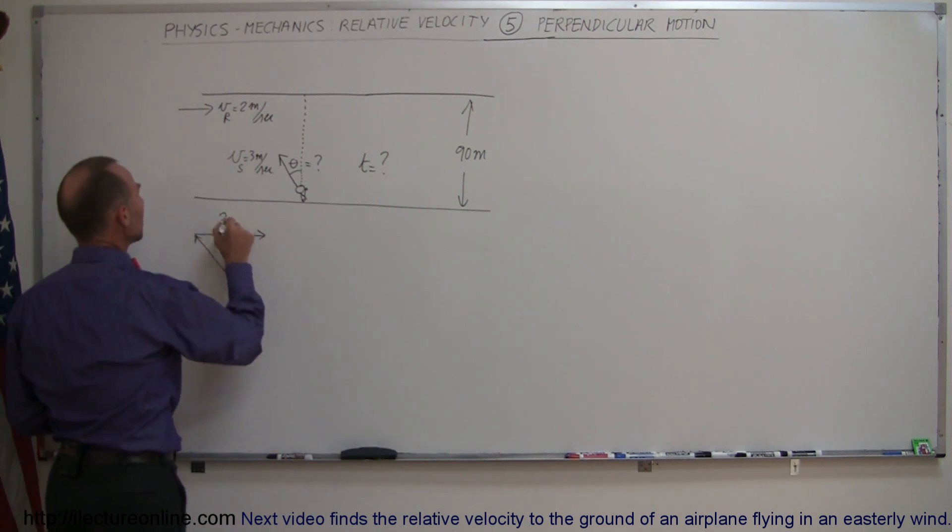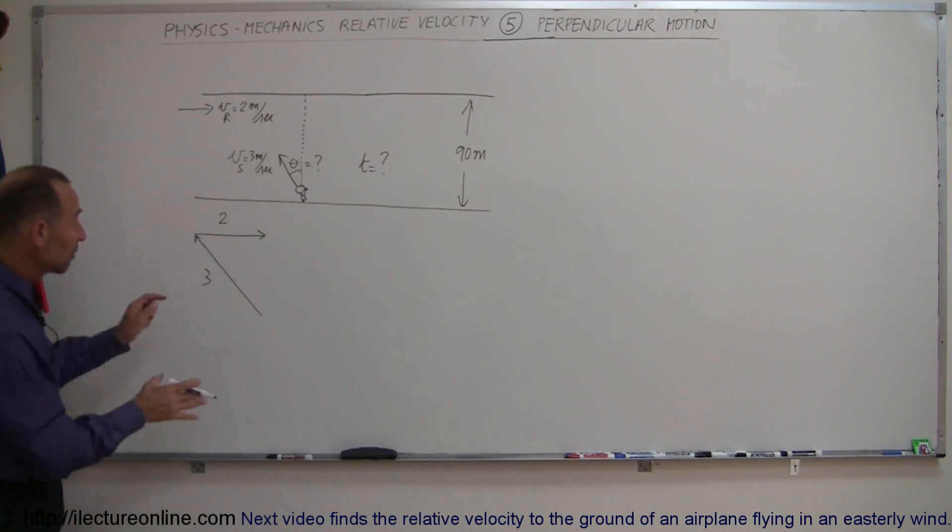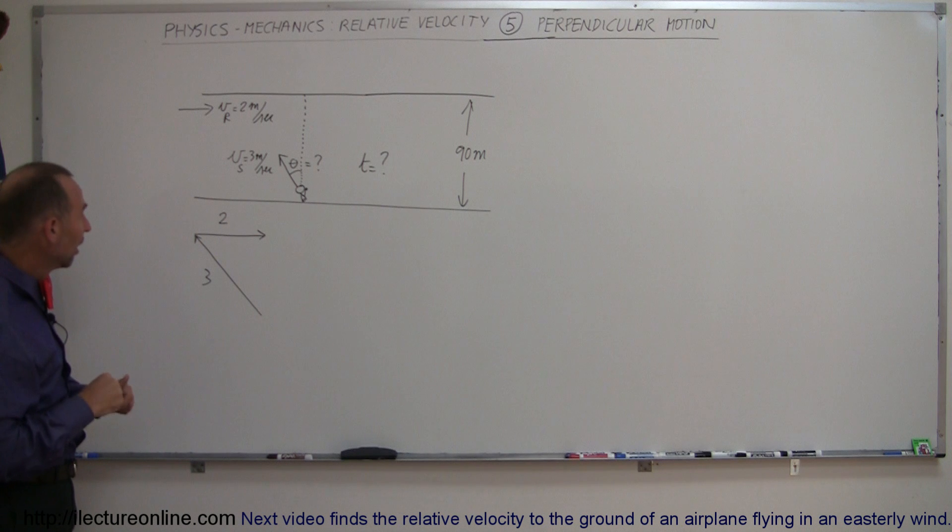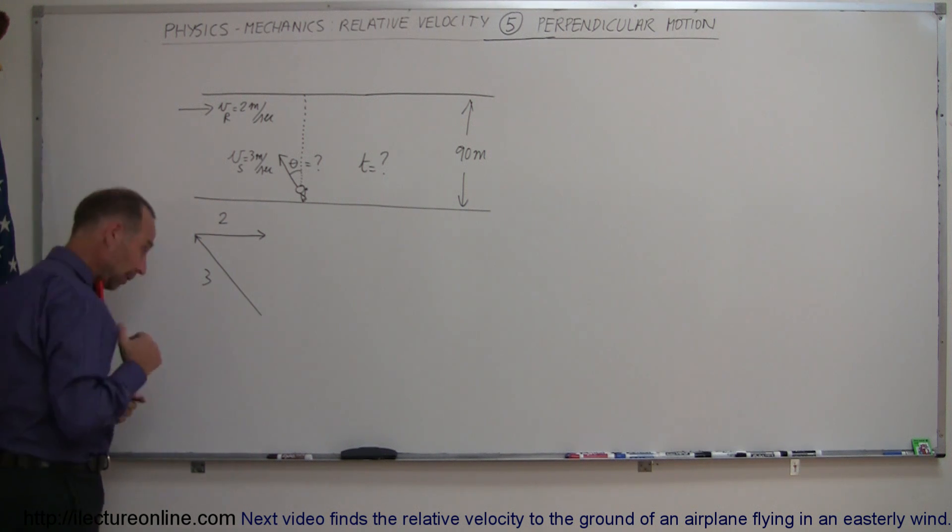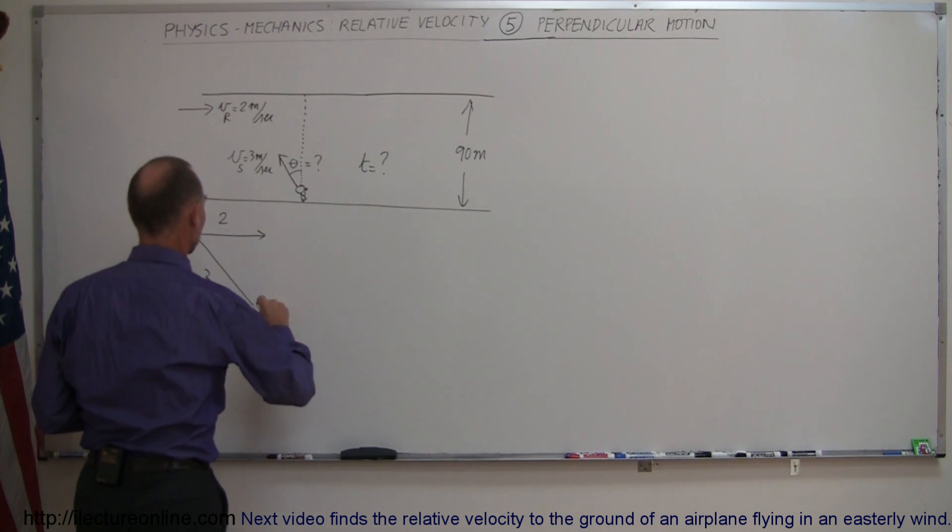And so this would be two meters per second, this is three meters per second, so the length of the vectors have to be relative to the speeds of the swimmer and the river. And so the resultant, where's my red pen, right here, the resultant vector then would be this vector right here.